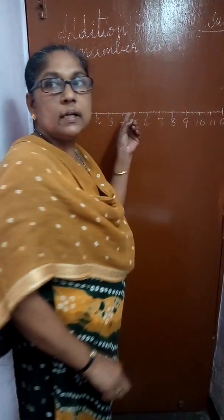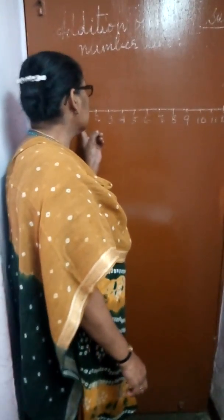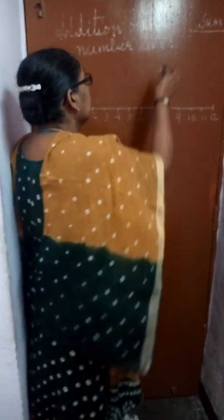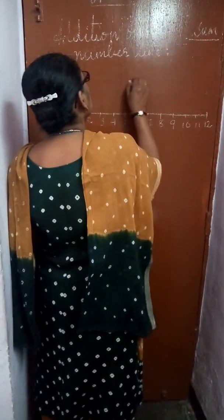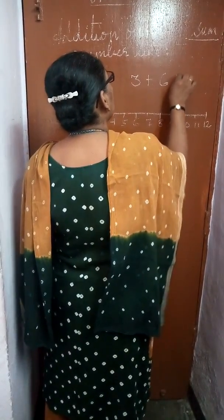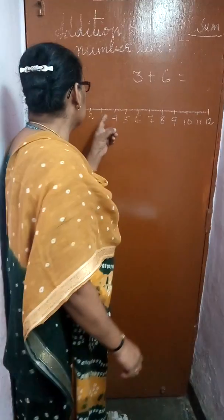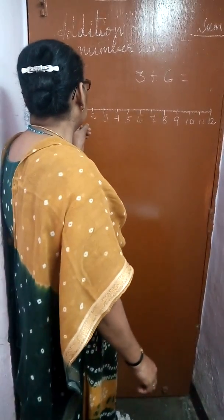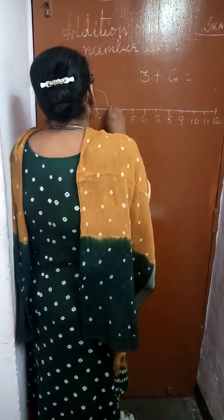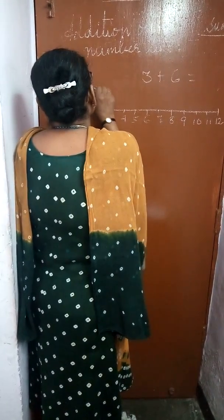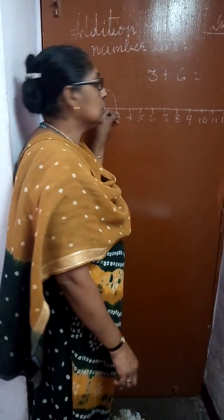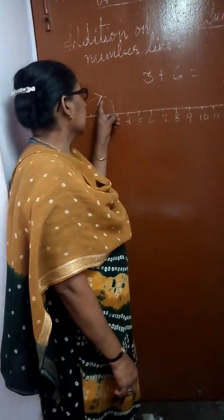How many numbers are here, children? 1 to 12 numbers are here. We have to take an additional number line. 3 plus 6. First, what you have to do? You have to go from 0 to 3 — 3 jumps you have to make here, from 0 to 3, and you have to show one arrow mark showing forward count.